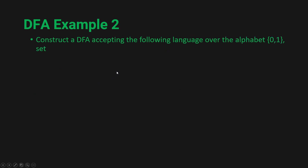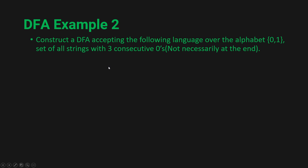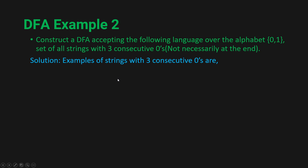Now for the next example: construct a DFA accepting the following language over the alphabet {0, 1}. The language is the set of all strings containing three consecutive zeros — not necessarily at the end of the string. Examples include: 000, 10001, 1000, 10101000, and so on.